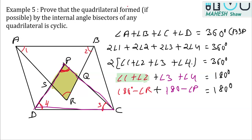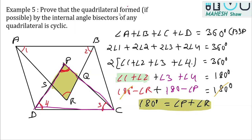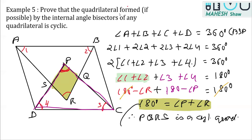The two 180s on the left cancel. Transposing −angle P and −angle R to the other side gives angle P + angle R = 180°. Therefore, since opposite angles P and R are supplementary, quadrilateral PQRS is a cyclic quadrilateral.